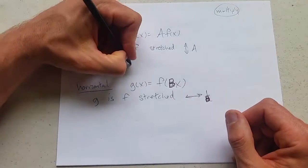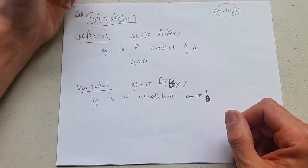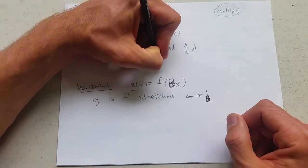What happens if a is less than 0? This is going to have what's called a vertical reflection.